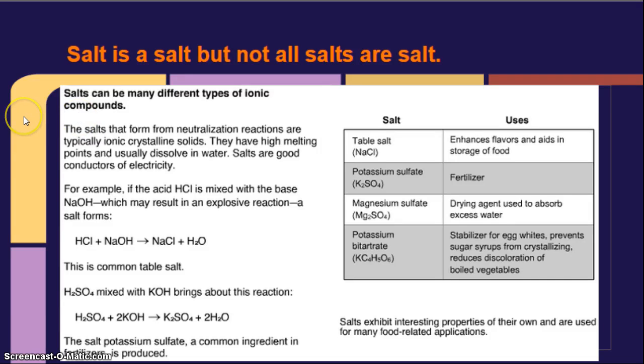You do not have to write down this slide. Salts can be many different types of ionic compounds. The salts that form from neutralization reactions are typically ionic crystalline solids. They have high melting points and usually dissolve in water. Salts are good conductors of electricity. For example, if the acid HCl is mixed with the base NaOH, which may result in an explosive reaction, a salt is formed. This is common table salt. H2SO4 mixed with potassium hydroxide brings about this reaction. H2SO4 plus two molecules of potassium hydroxide yields K2SO4 plus two water molecules. So, this is water, and we would call this a salt.